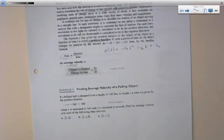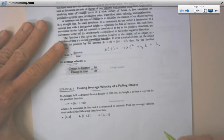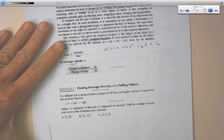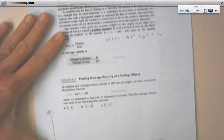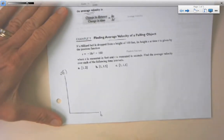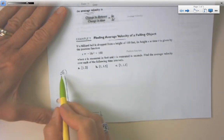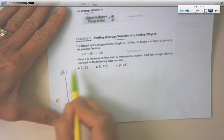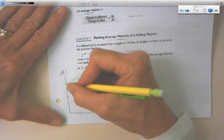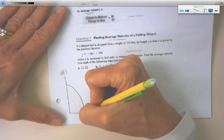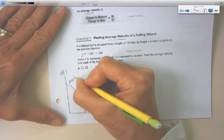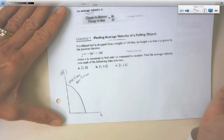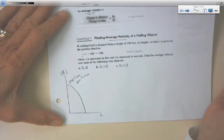We're going to find the average velocity of a falling object. In this particular instance, a billiard ball is dropped from a height of 100 feet. Its height s at time t is given by a position function. I can describe it by a t-axis, which is the independent variable, and s, the position function, is dependent on time. Negative 16t squared plus 100. This position over time is going to follow this path.